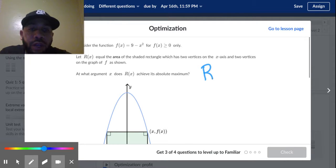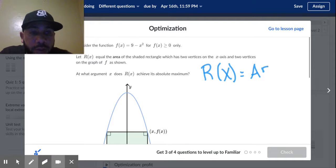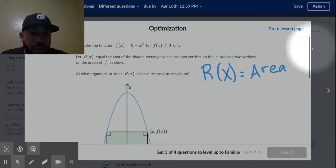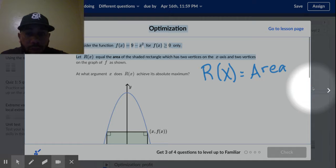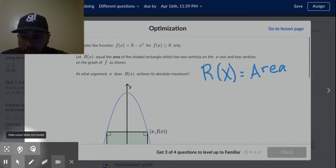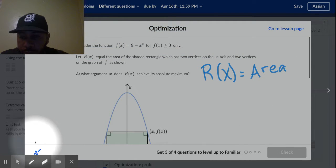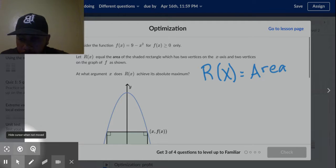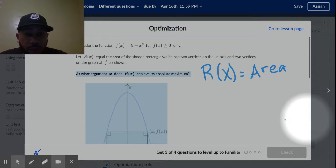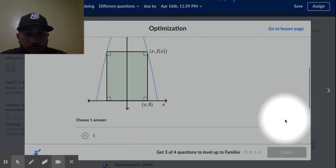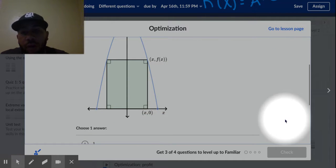We know that R(x) is equal to area. Let me scroll down just a tad bit. Let me click this just so you guys can get a visualization of what's going on here. Let me scroll down. There we go. All right, so R(x) is that area.